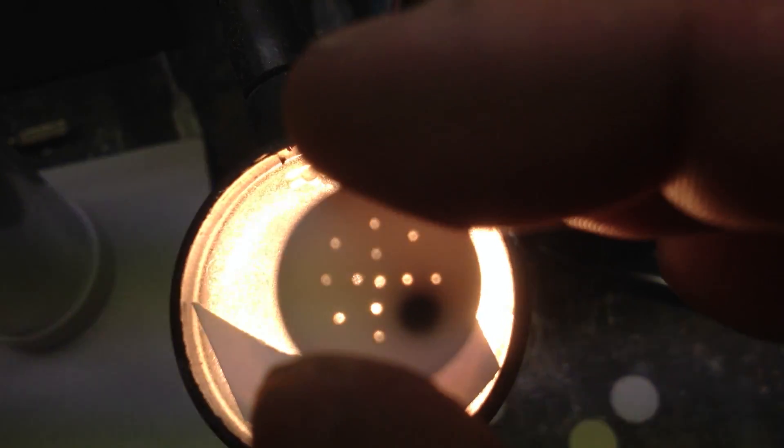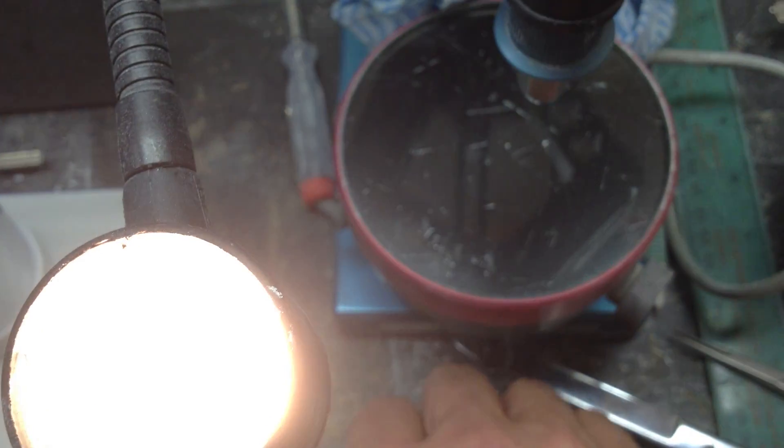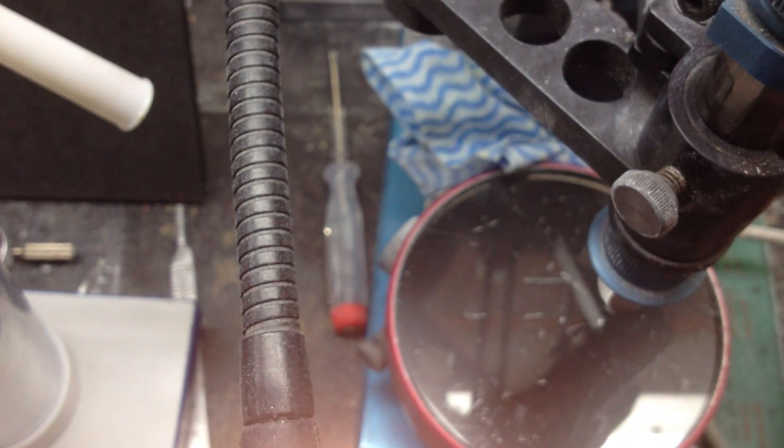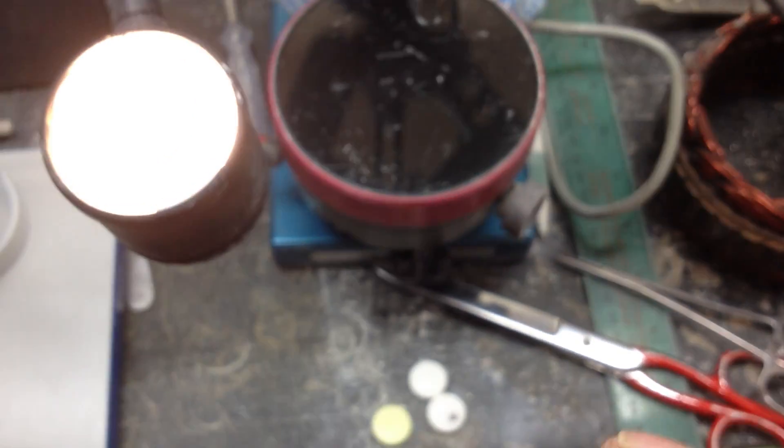Now the holes there look pretty big, but they're not. They're only 0.32 millimeters, which is equivalent to 12 thou I think. So it's right in between 10 thou and 15 thou, which is the maximum size of holes.